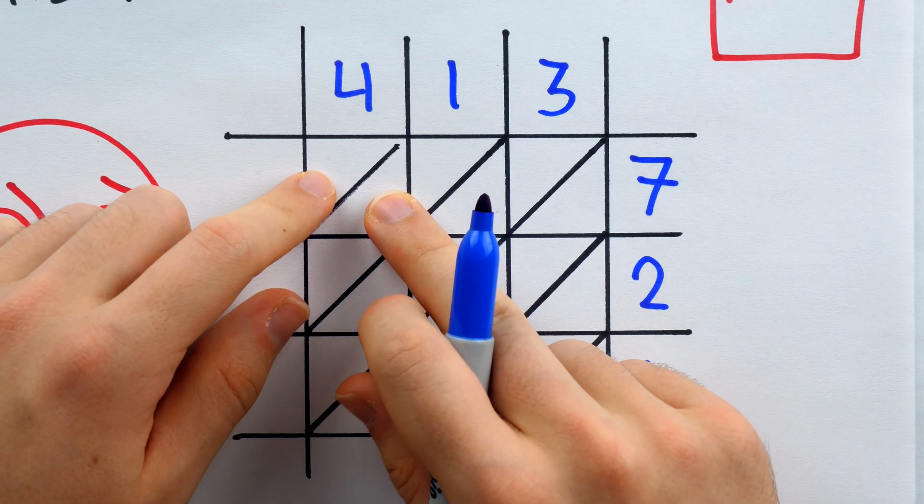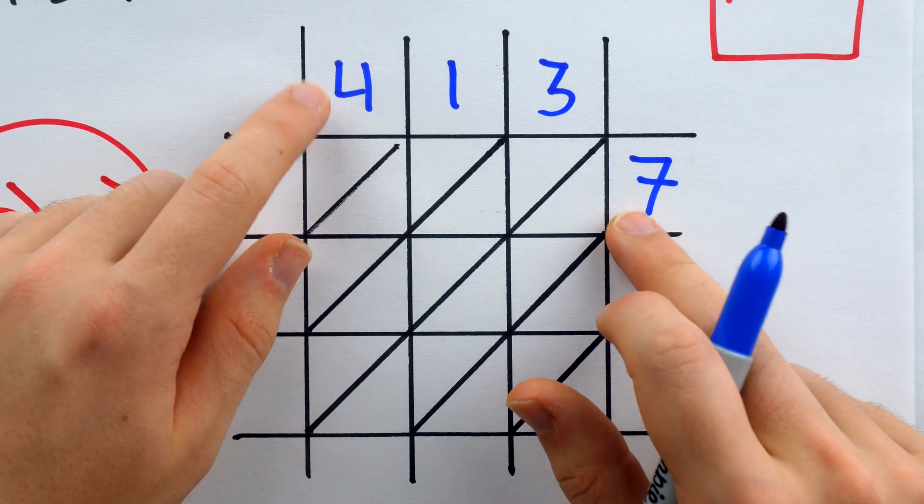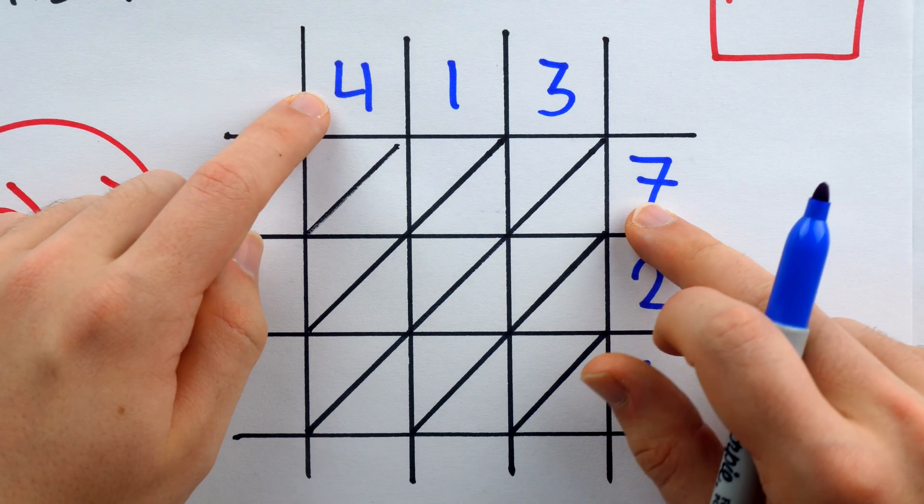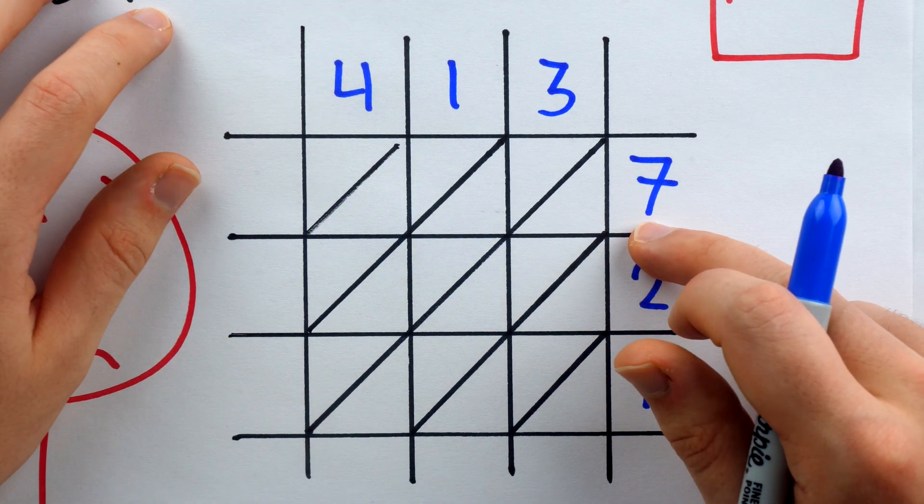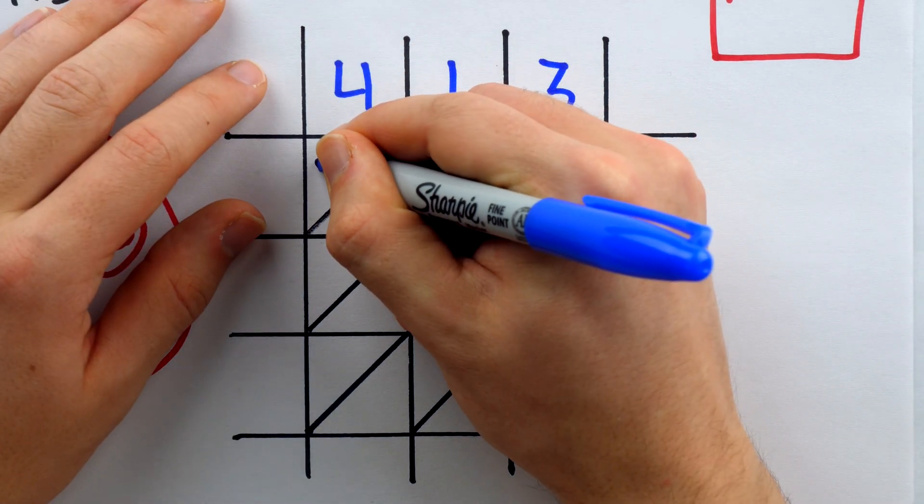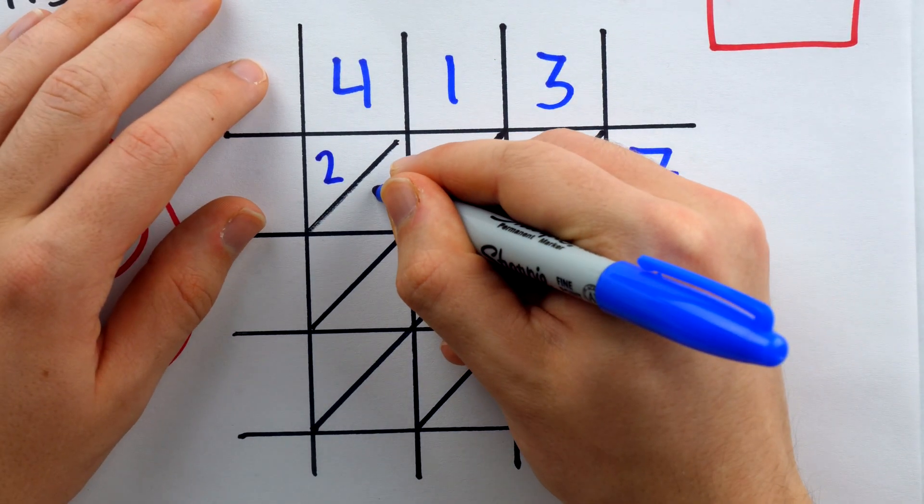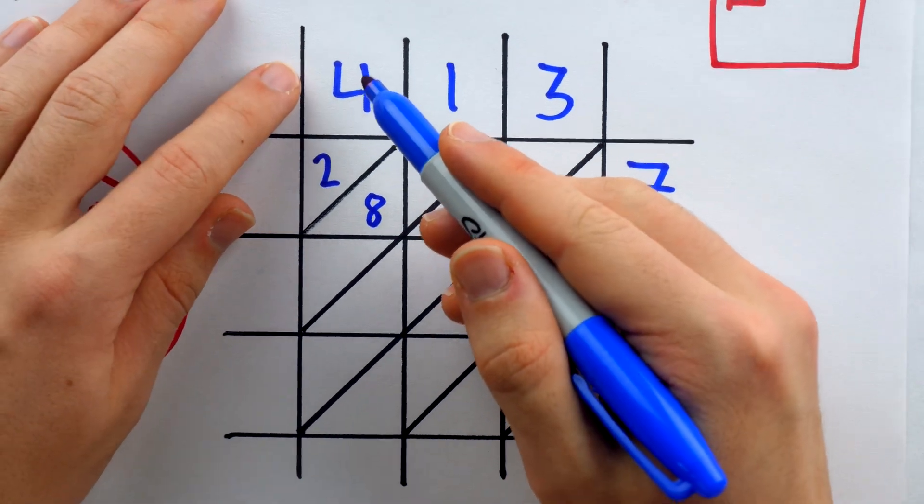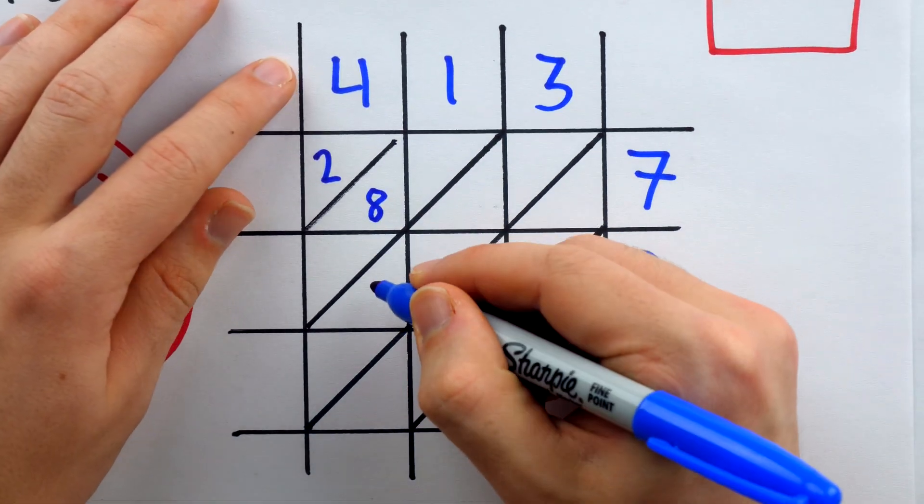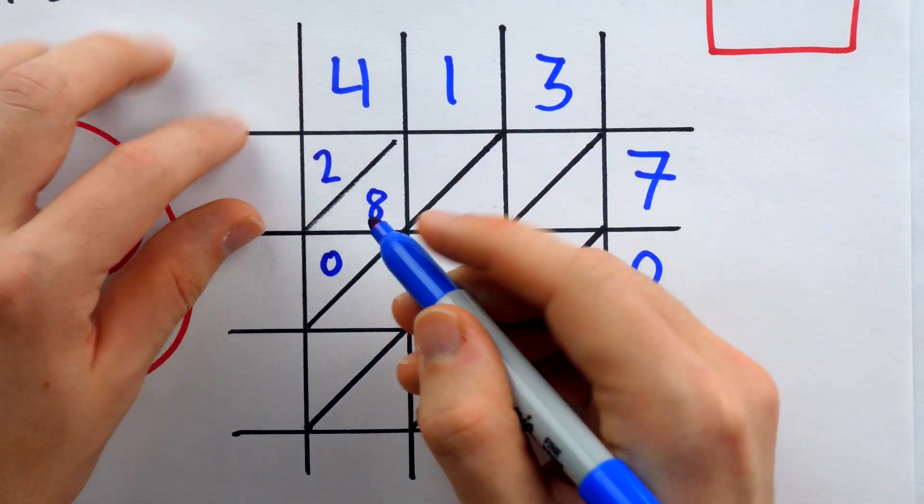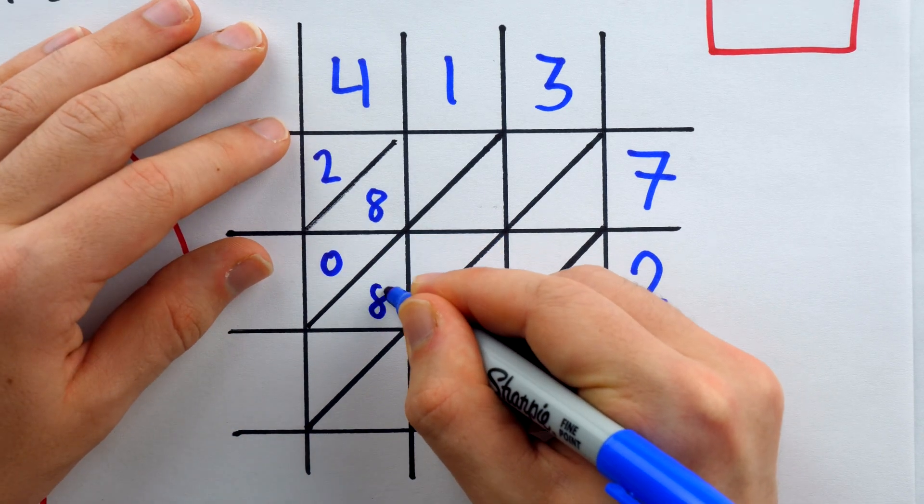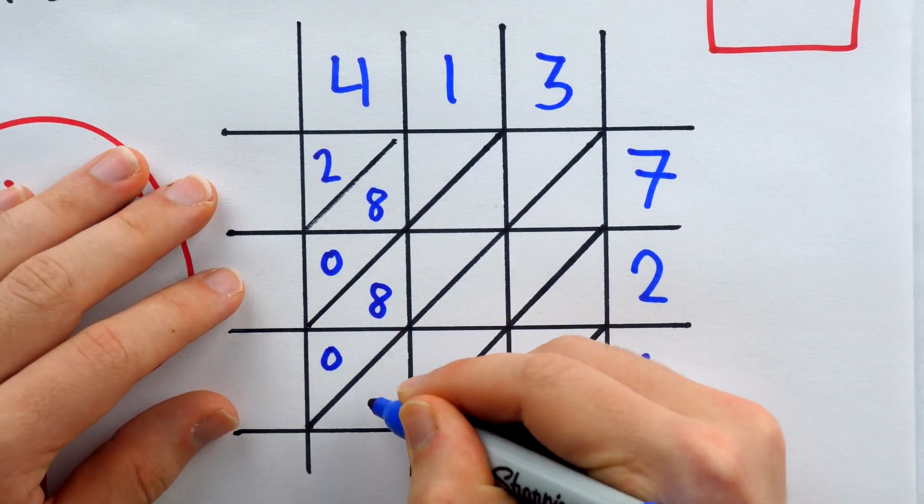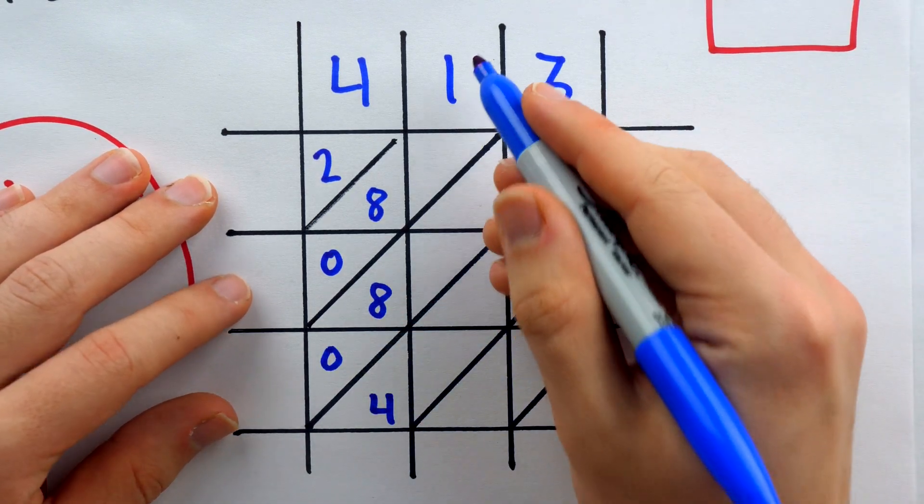In each square, we simply write the product of the single digit multiplication with the column number times the row number. 4 times 7 is 28. So we write 28, putting the tens digit in the upper part of the square, and the ones digit in the lower part of the square. And we proceed in this manner. 4 times 2 is 8. So we put a 0 in the upper part of the square, and an 8 in the lower part. Similarly, 4 times 1 is 4, so we write 04. And continue.